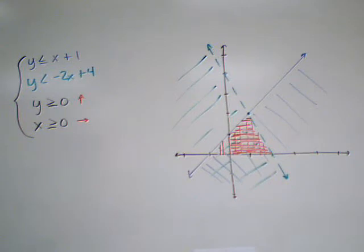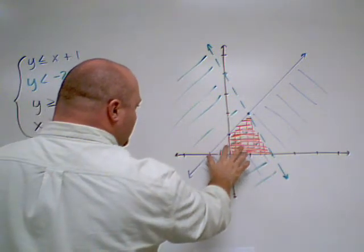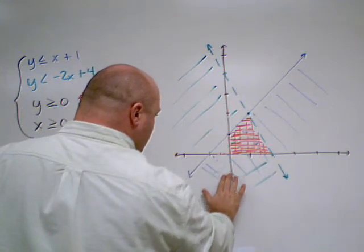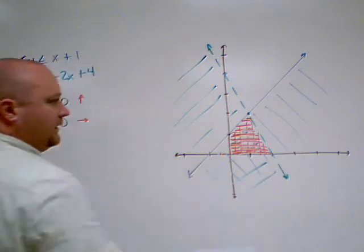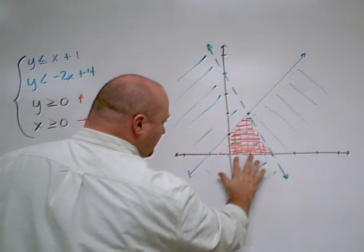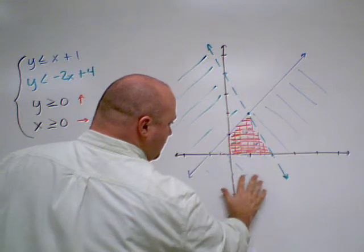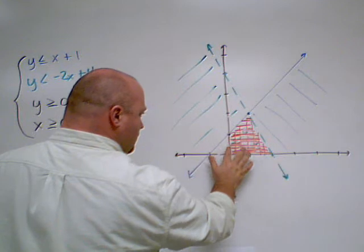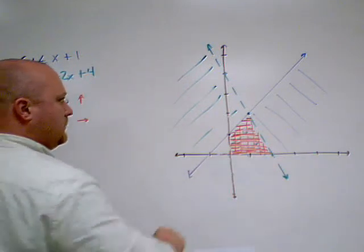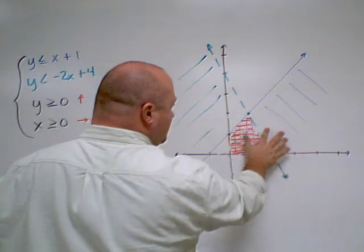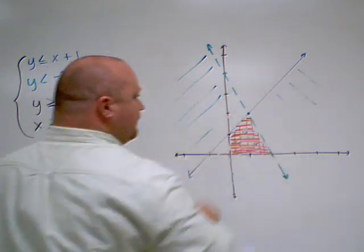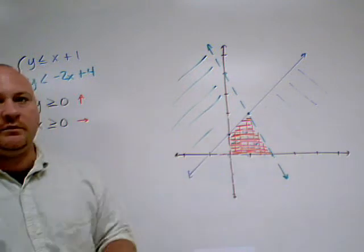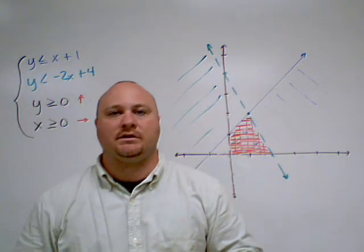So I know it's getting hard to see, so what I'm going to do is I'm going to erase all the areas that are not completely overlapped, so we can see them either. Then all of this will go away as well. So all we need is this little shaded region here.